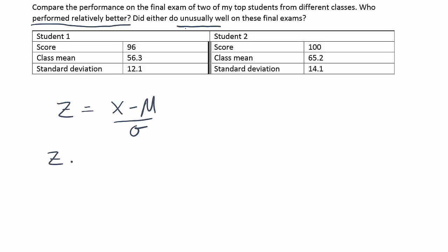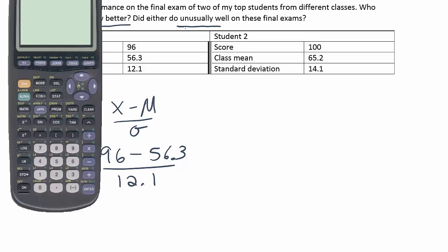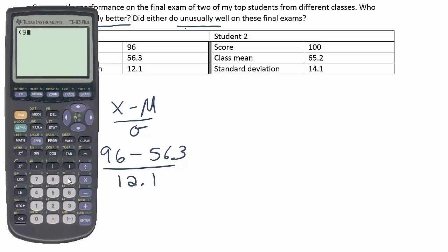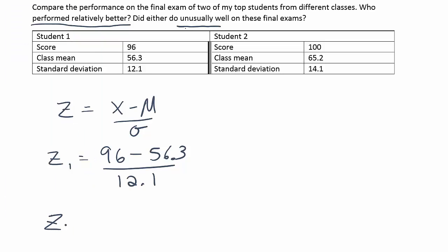So let's do the first z-score. I'm going to use a subscript z sub one. The measurement here for student one is 96. That's his score. The class mean was 56.3 and the standard deviation was 12.1. Let's work out that z-score very quickly. So we can do it all at once if we do 96 minus 56.3, close up the parentheses, and divide by 12.1. And when we do that, we get the answer 3.28, a very impressive z-score.